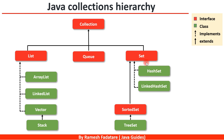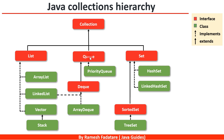For Set, we have HashSet and LinkedHashSet as commonly used implementations. We also have the SortedSet interface, whose purpose is sorting elements in ascending or descending order, with TreeSet implementing it. For Queue, PriorityQueue is the common implementation, and Deque extends Queue with ArrayDeque as its implementation class.